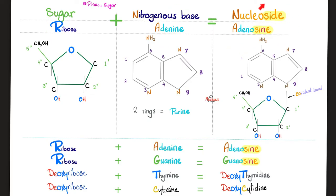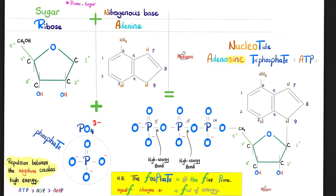Sugar plus base equals nucleoside. Example, ribose sugar plus adenine base equals adenosine, which is a nucleoside. Add a phosphate group to it, which is negatively charged. And before you know it, we have nucleotide, such as adenosine triphosphate. Never ever forget that the phosphate is at the five prime, always the five prime carbon. Phosphate has a negative charge, and phosphate is full of energy.